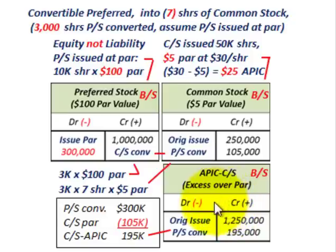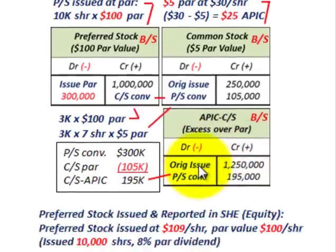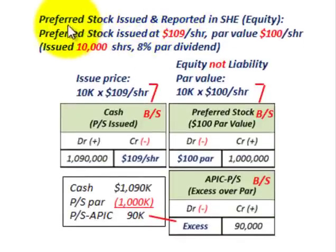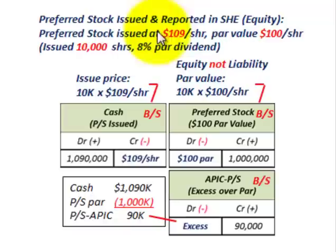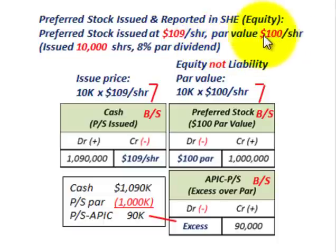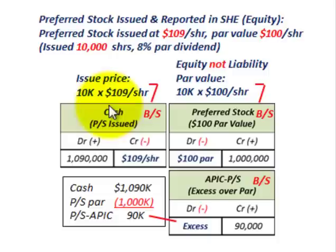That takes care of our convertible preferred stock — very basic, but it shows what's going on. Now let's look at the case where we're issuing preferred stock and how it will be reported in the shareholder's equity section of the balance sheet. The preferred stock is issued at $109 per share, the par value is $100 per share, and we're issuing 10,000 shares with an 8% par dividend rate.